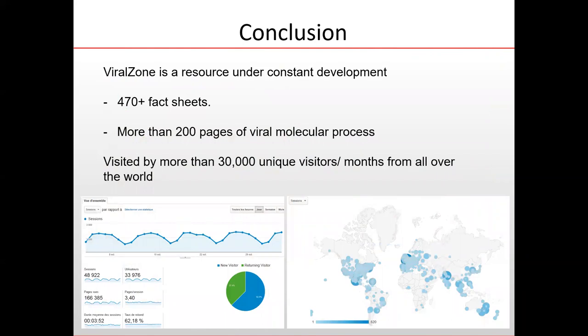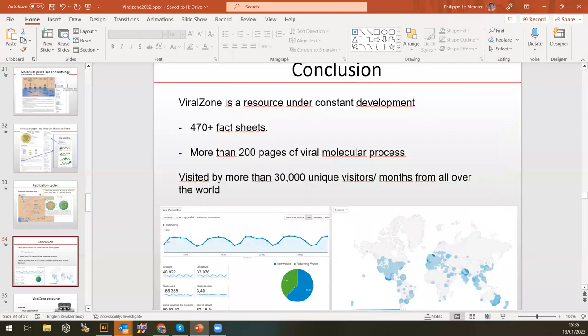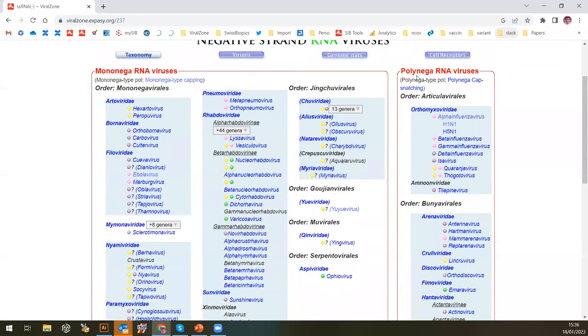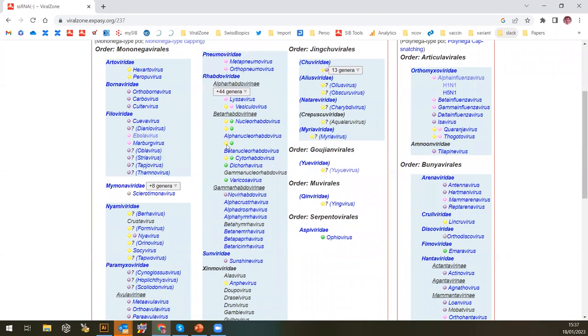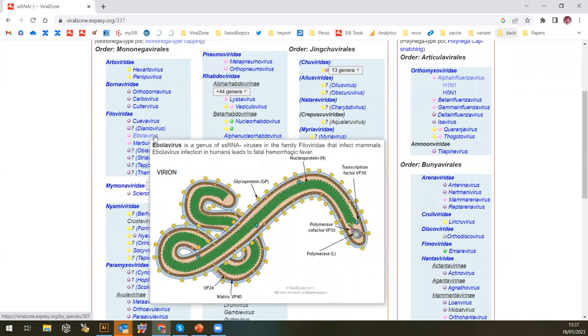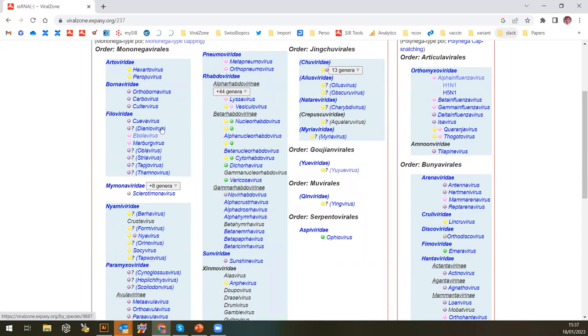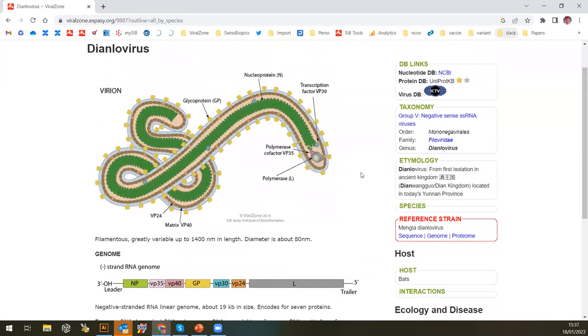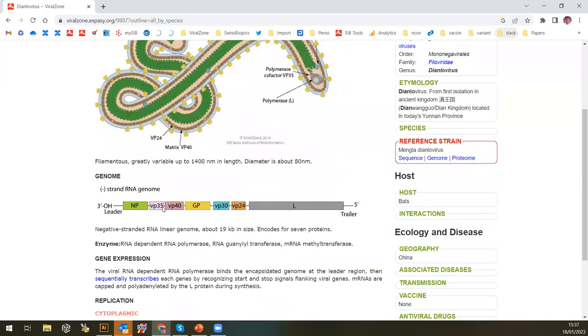ViralZone is under constant development. We have about 500 fact sheets now, and we are adding more as we discover new viruses. Actually, many viruses are now discovered by metagenomics, and it's a very nice thing because it's a way to discover a lot of diversity we were not aware of before. For example, Filoviridae, the family to which Ebola belongs—we have a lot of genera which have been identified by metagenomics, and these are put into parentheses. Why is this? Because by metagenomics, we have very few real data. We have the genome, we have the sequence, but we are not sure of the host because it's from environmental samples.